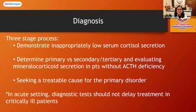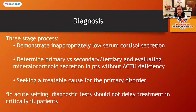The diagnosis of adrenal insufficiency involves three stages. The first stage is demonstrating inappropriately low serum cortisol secretion. The second stage is determining between primary and secondary causes and evaluating the need for mineralocorticoid replacement. The third stage is seeking a treatable cause for the primary disorder. However, in an acute setting when the patient presents with an Addisonian crisis, we should not delay treatment for the sake of diagnosis.